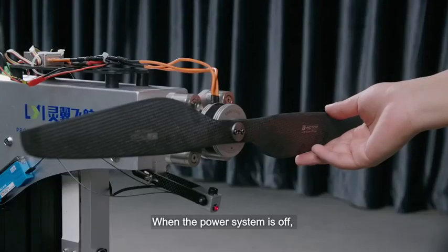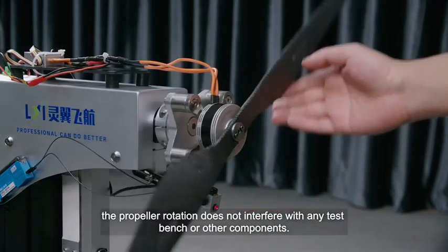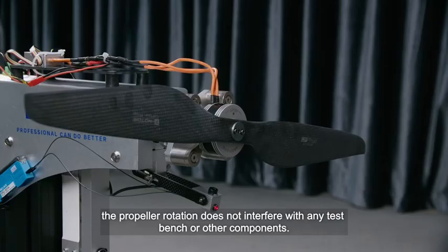When the power system is off, manually rotate the propeller to ensure that the propeller rotation does not interfere with any test bench or other components.